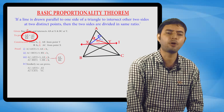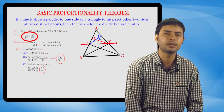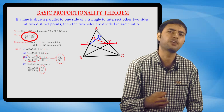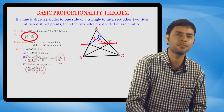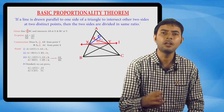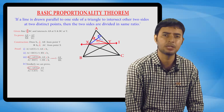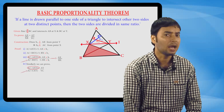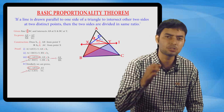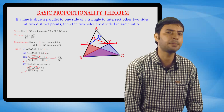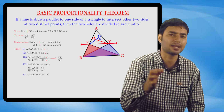To prove AX upon XB equals AY upon YC, we need to show that area of triangle AXY upon area of triangle BXY equals area of triangle AXY upon area of triangle CXY. The numerators are the same. For the denominators, triangle BXY and triangle CXY lie between the same parallels — line L parallel to side BC — and have the same base XY. Therefore, area of triangle BXY equals area of triangle CXY.